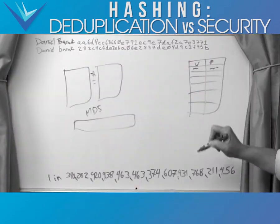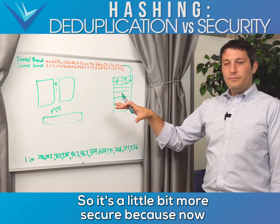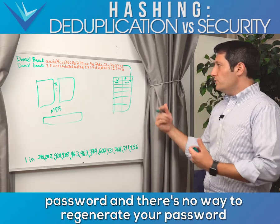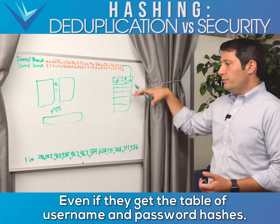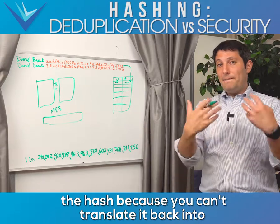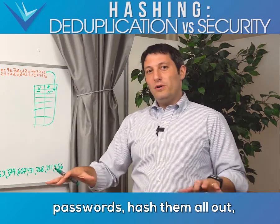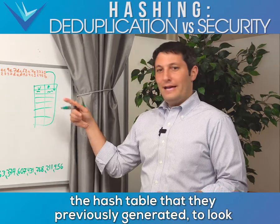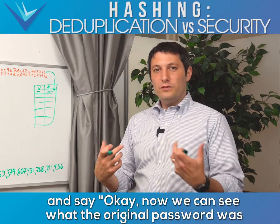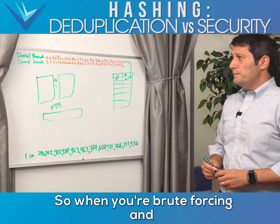The first-level solution was: instead of storing the password, store the MD5 hash in the password field. When you type in your password on the website, it hashes it first and checks the hash against the database. There's no way to regenerate your password from the hash value. So even if they get the table of username and password hashes, they can't log into the site with just the hash. The problem is people started taking common passwords, hashing them all, storing those hashes in hash tables, and using them to look up against breached password databases to find the original password.